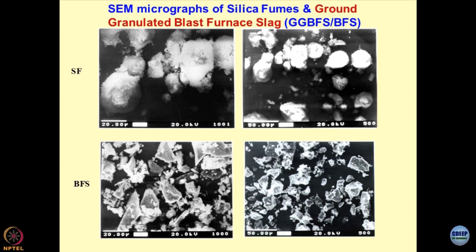Why does this happen? Because if you look at the surface of these particles, they have very furry structures with protrusions on the surface. These protrusions are what make these materials very light and airborne.